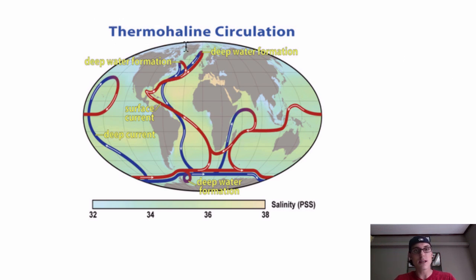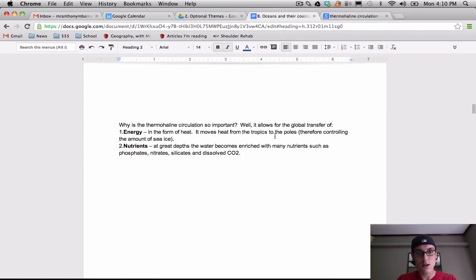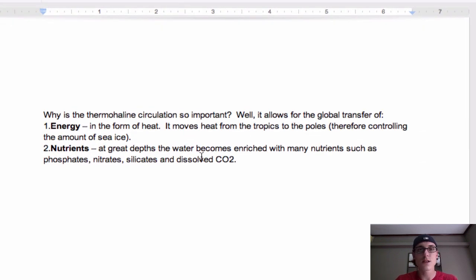The second main idea is what you'll find a little bit lower on your Google Doc, you'll see it here. The second main idea is why the thermohaline circulation is important. So the first thing that you need to know is you need to know how it operates. And then the second thing you need to know is your second main idea. Why it's important that the thermohaline circulation occurs in the first place anyways.